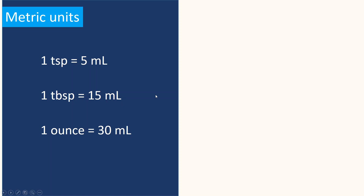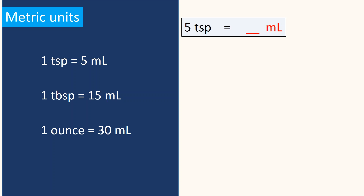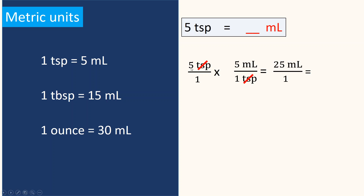Let's take some samples to practice converting into metric units. Five teaspoons equals how many milliliters? Set up the dimensional analysis: 5 teaspoonfuls, with 1 teaspoonful equal to 5 milliliters. Cancel out teaspoonful, then multiply on the tops — 5 times 5 milliliters — that equals 25 milliliters. So five teaspoonfuls equals 25 milliliters.